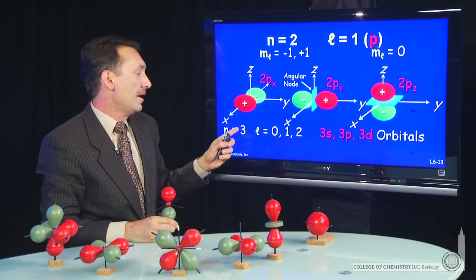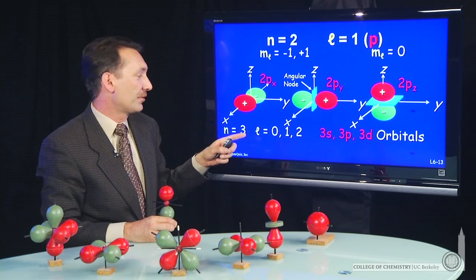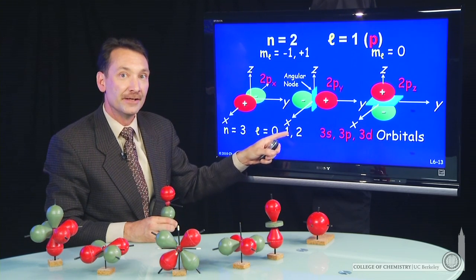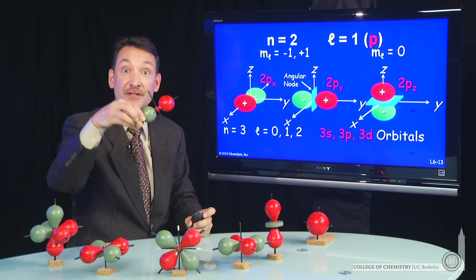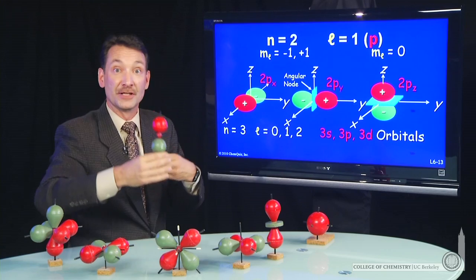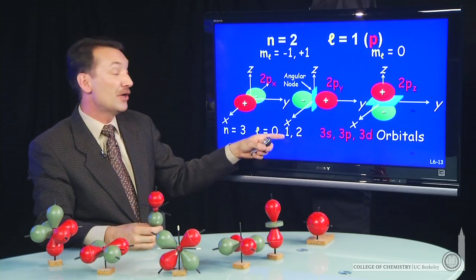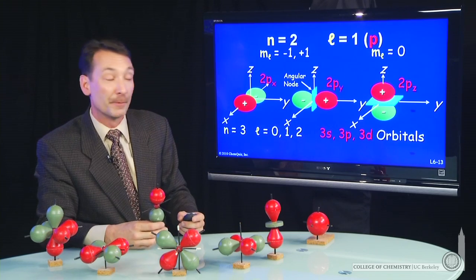We'll have some 3p orbitals. That is, n equal 3, l equals 1. And those will be shaped like the 2p orbitals, except n is 3, so they'll be further from the nucleus, larger distribution. And they'll have an extra node, an extra radial node, because of the higher quantum number.